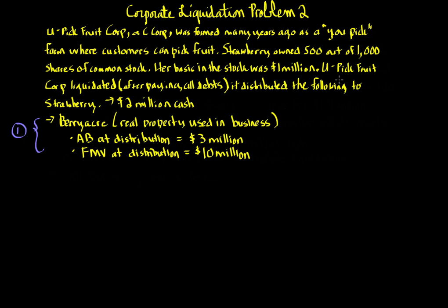We have a liquidation. We know that U-Pick Fruit Corp is going to liquidate, so the section 346 issue of whether we have a complete liquidation has been resolved. Once we know complete liquidation is present, there are two possibilities: either the general rules under section 331 and 336, or the special liquidation rule for a subsidiary where a parent corporation owns 80% or more of stock. Here Strawberry owns 500 out of 1,000, so 50%, and Strawberry is an individual. Therefore, the special rule does not apply.